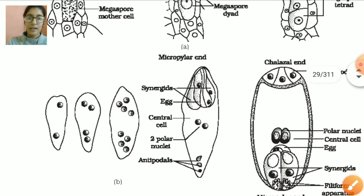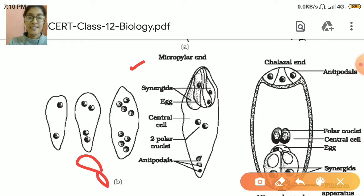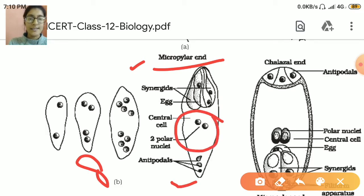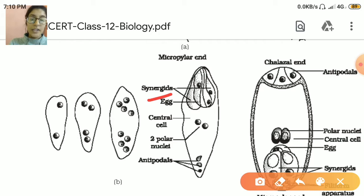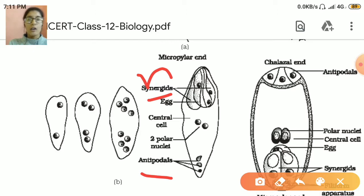You can see eight cells have formed. At this stage there are eight cells. When eight cells are formed, these cells start arranging themselves. Three of them arrange at the micropylar end, three arrange at the antipodal end, and two in the central. Total eight cells are formed. The three at the micropylar end are known as synergids. The three at the chalazal end are known as antipodal cells. These are haploid — haploid means N. And at the end there are two polar nuclei, which are also N. All of them are N.